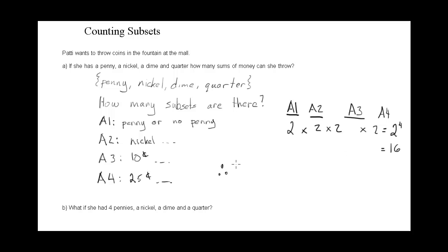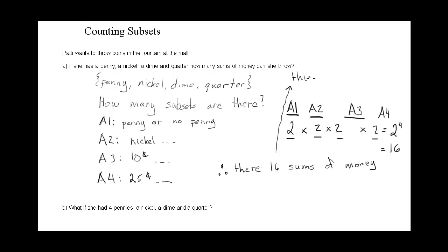So therefore there are sixteen sums of money. Now there's one addition we might want to make. Remember, one of the two options for each coin was 'no,' so one of these sixteen is the null set — which would be throwing no money, i.e., she throws nothing.